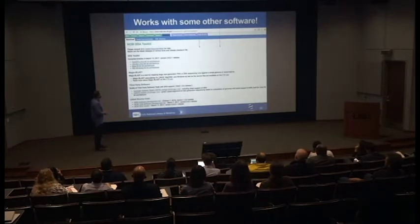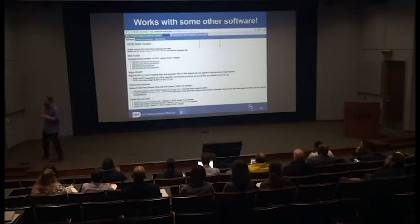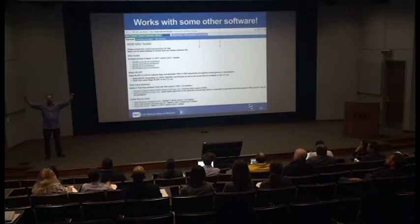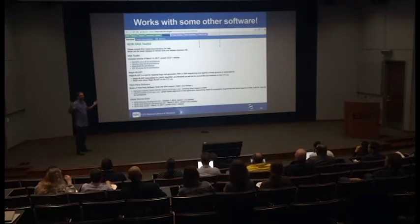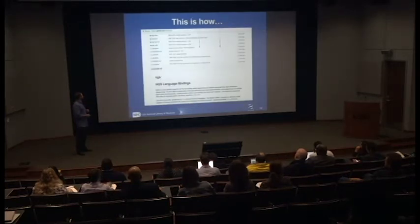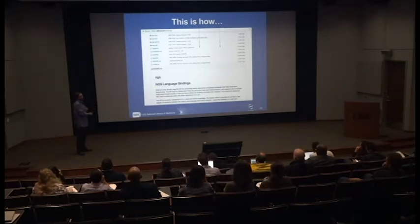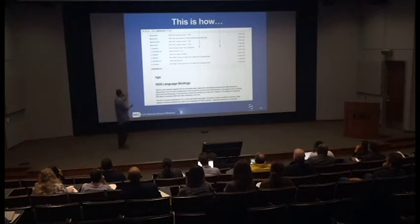MAGIC BLAST works with some other software. If you like HiSat, you can use HiSat. For whole transcriptome analysis mapping to a genome, MAGIC BLAST is about 70% of the way to HiSat on the TopHat-to-HiSat speed continuum. GATK also works — if there's germline data, you can run GATK directly on this stuff, get your VCF out, and do this in a streaming way. It works because both of those have enabled these NGS language bindings. There's a software development kit so you can make this work with your bioinformatics collaborators' tools.